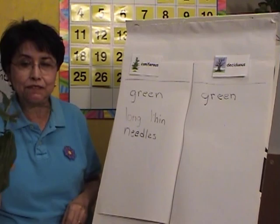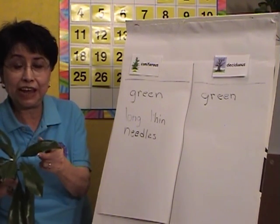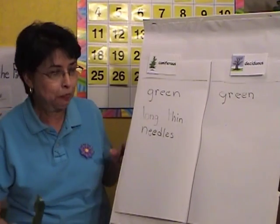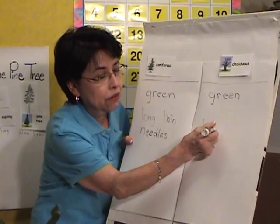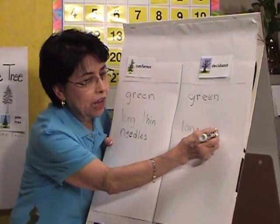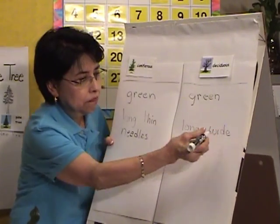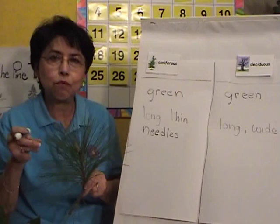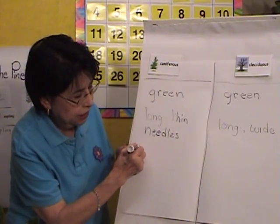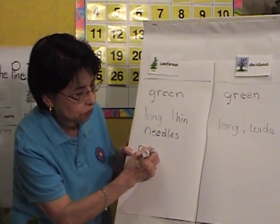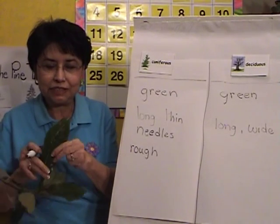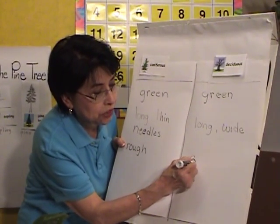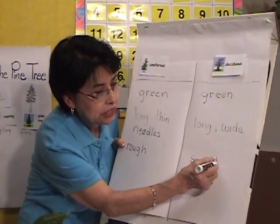Now, what can you tell me about these leaves? They are long and — fat or wide. They are long and wide. What else can you tell me about these ones? They are rough. When you touch them, they feel rough. R-O-U-G-H. What about these ones? Oh, they are smooth. Shiny. Smooth. S-M-O-O-T-H.